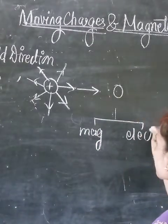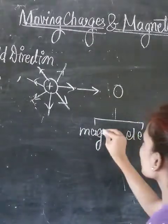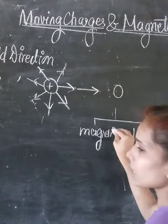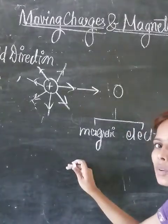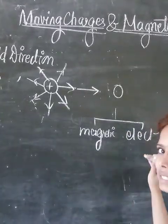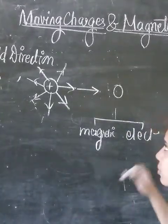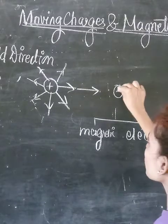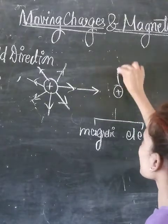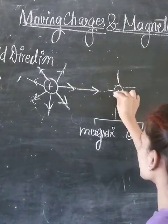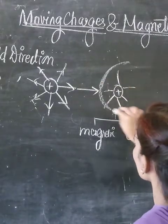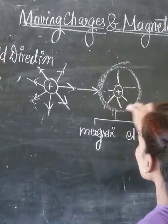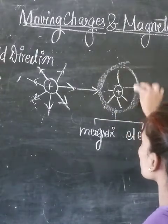So a moving charge will possess both a magnetic field as well as an electric field. The force experienced by the charge will be the sum of both — the magnetic force as well as the electric force.